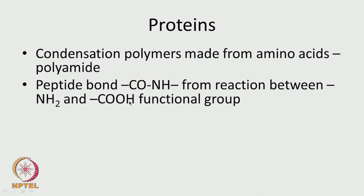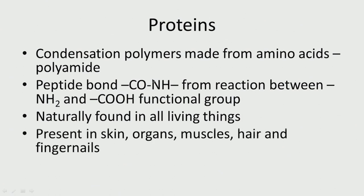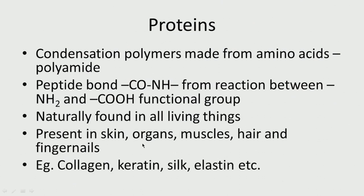Proteins are condensation polymers made from amino acids and polyamide. They have the peptide bond or the amide bond, that is C double bond O–N. When you have a reaction between NH2 and COOH, you end up forming this particular peptide bond. In nature, proteins are found abundantly and can be used as biomaterials — skin, organs, muscles, hair, fingernails. For example, collagen, keratin, silk, and elastin are different types of protein-based biomaterials.